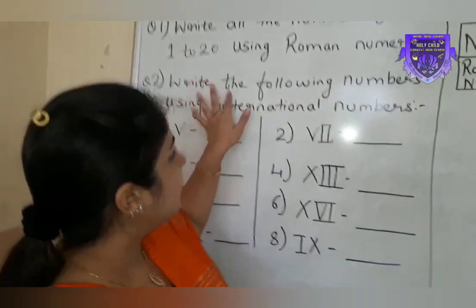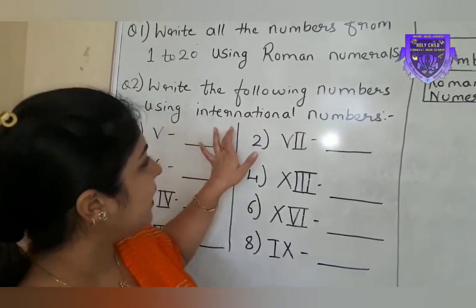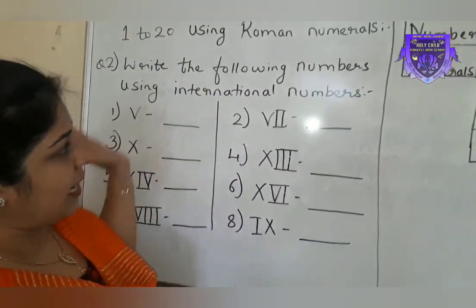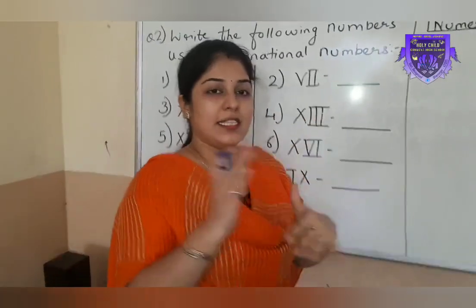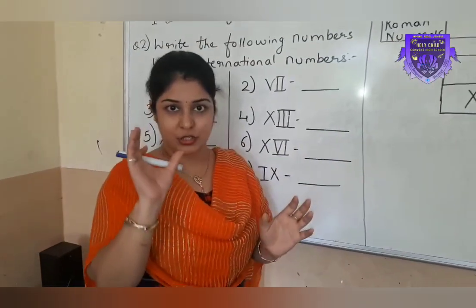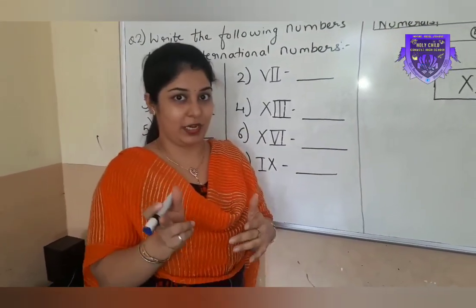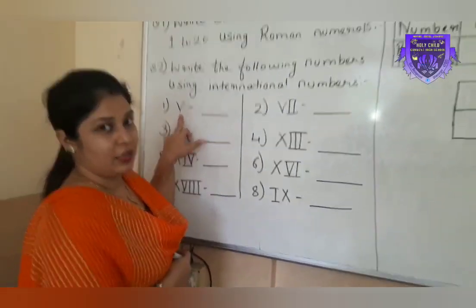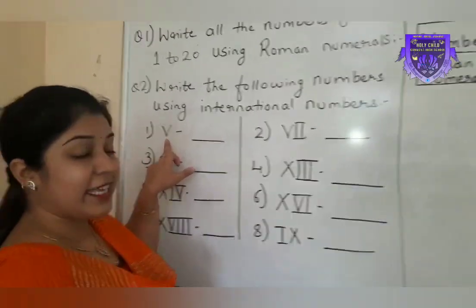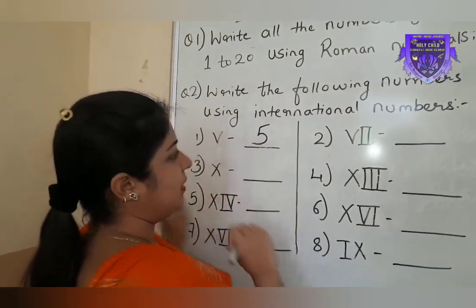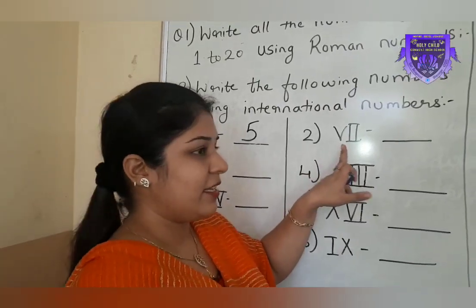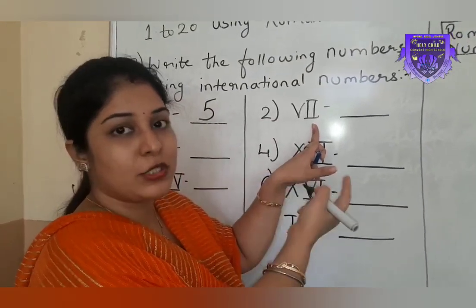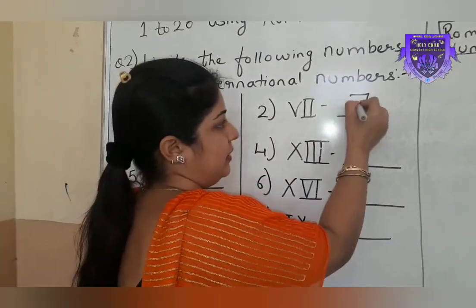Now question number 2: write the following numbers using international numbers. Some Roman numbers are given and we have to write in international numerals. The first one is the symbol V, so V indicates 5. Second is V then two times I. V indicates 5; two times I on the right side means 5 plus 2 equals 7. This is 7. X is the symbol for 10.